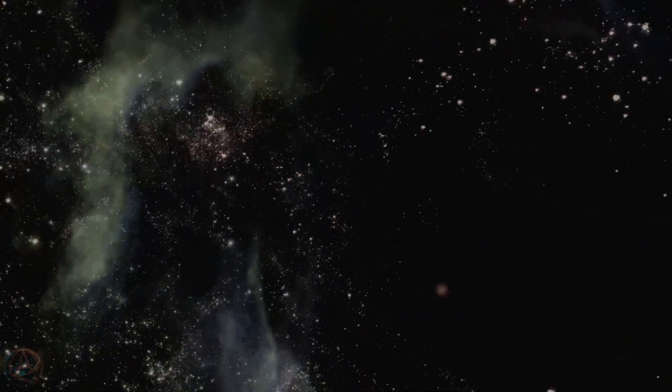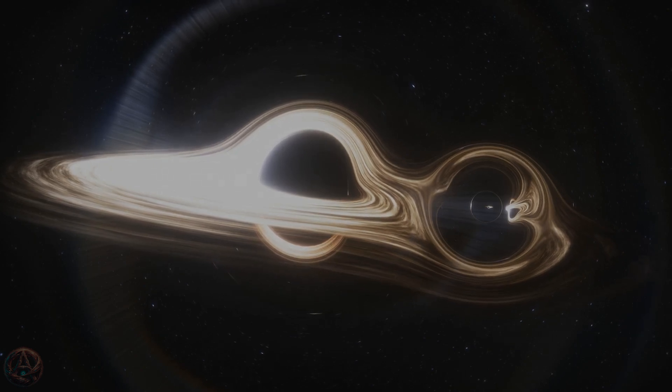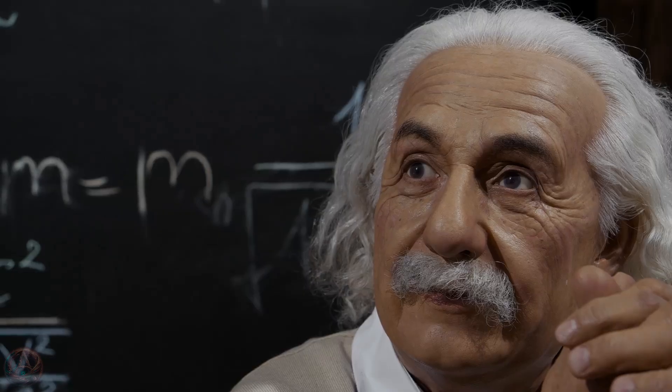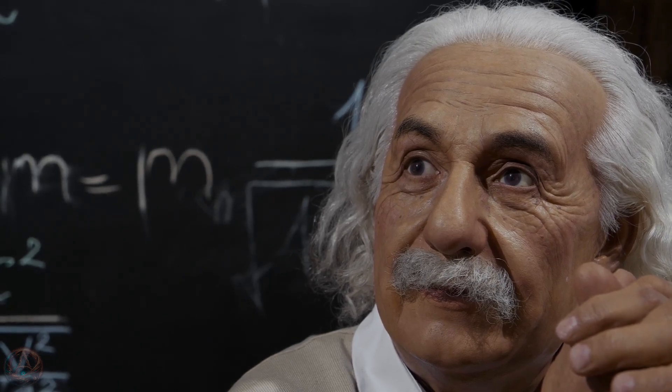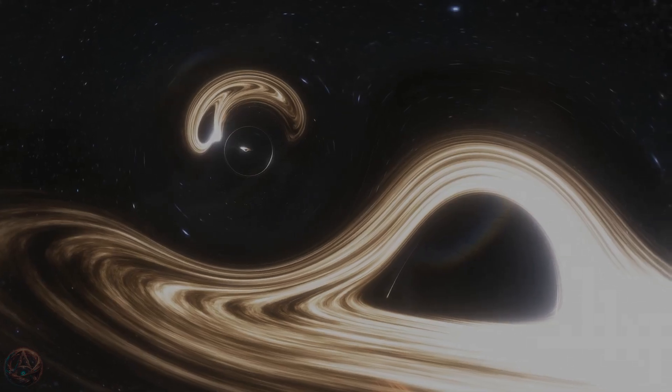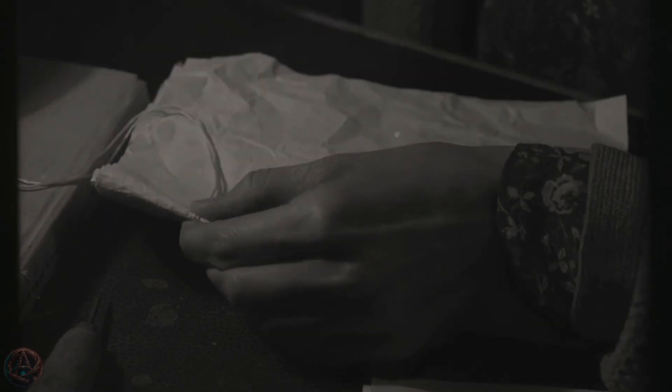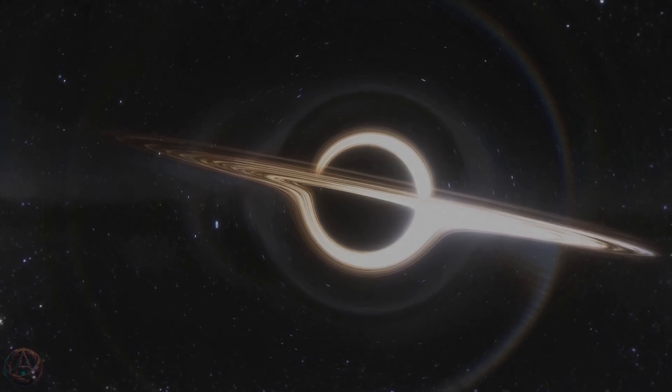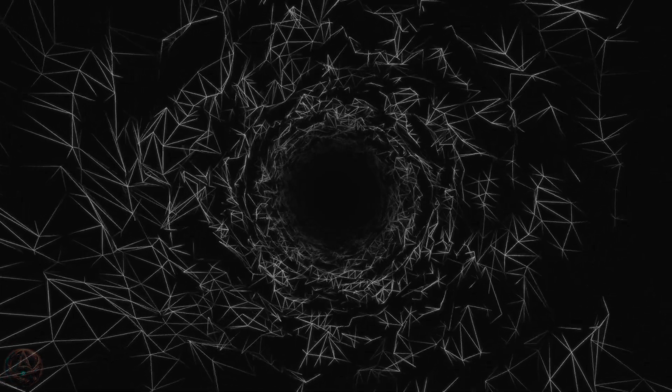This is where things get interesting. The idea that black holes might connect to other universes comes from something called the Einstein-Rosen Bridge, better known as a wormhole. Einstein and physicist Nathan Rosen proposed that black holes might not just be one-way sinks into oblivion. Instead, they could be tunnels, linking different regions of space-time. Imagine a piece of paper. If you place two dots on opposite ends and fold the paper so the dots touch, you've created a shortcut. A wormhole.